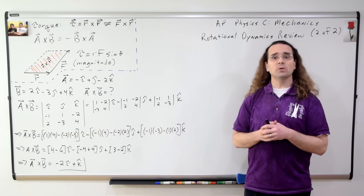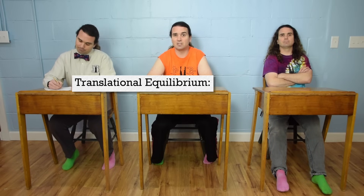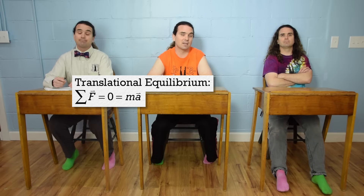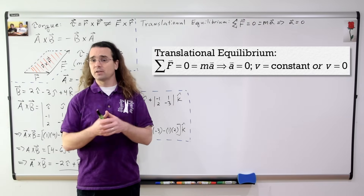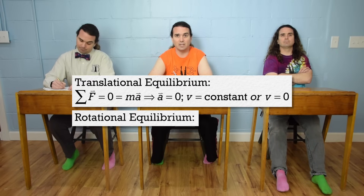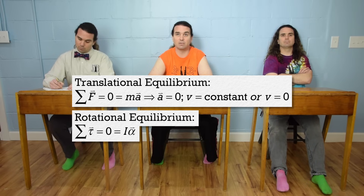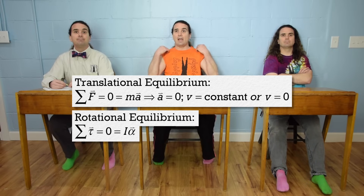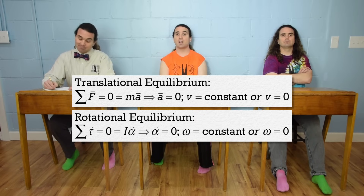Bobby, please tell me about translational equilibrium. Well, we just talked about this during our dynamics review. An object is in translational equilibrium if the net force acting on the object equals zero. And because net force equals mass times acceleration, that means the object is not accelerating. Very good. And now, Bobby, please extend that to rotational equilibrium. An object is in rotational equilibrium when the net torque acting on the object equals zero. This means, because net torque equals moment of inertia times angular acceleration, that the object has no angular acceleration — so the object is either rotating with a constant angular velocity or is not rotating at all.